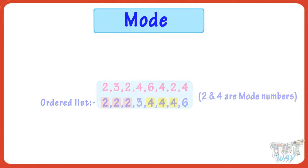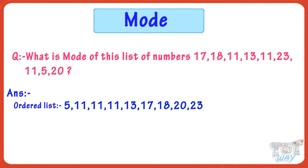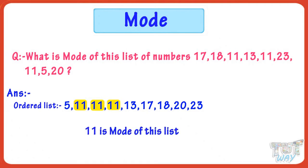Now let's find the mode of this list of numbers. First of all, write all the numbers in order — it can be increasing or decreasing order. Writing the numbers in order, we can see that 11 is occurring three times. So 11 is the mode of this list.